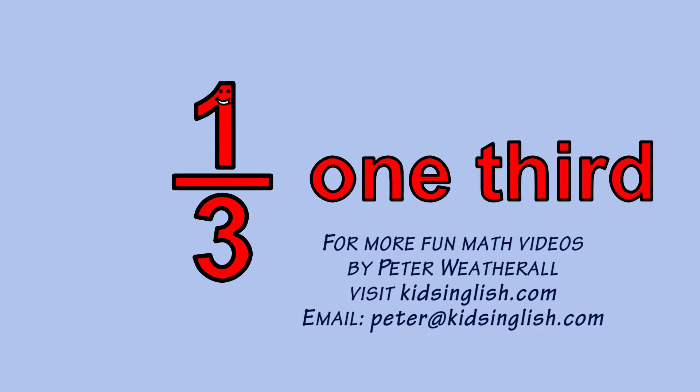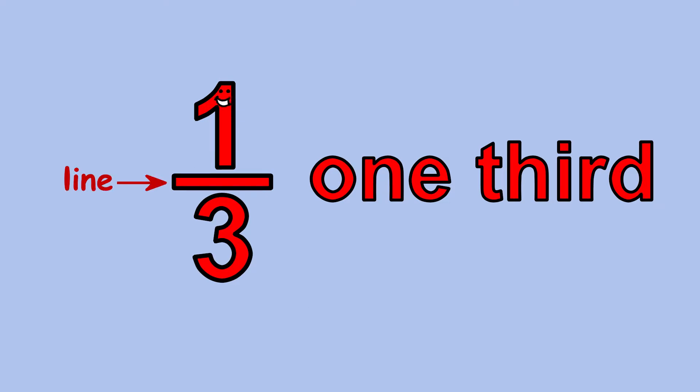Hi, my name is 1 3rd and I'm a fraction. I've got a line through my middle with a number called the numerator above the line and a number called the denominator below the line.